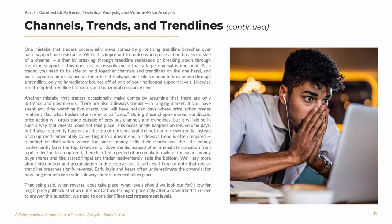We will say more about distribution and accumulation in due course, but it suffices to note that not all trendline breaches signify reversal. Early bulls and bears often underestimate the potential for how long markets can trade sideways before reversal takes place. That being said, when reversal does take place, what levels should we look out for? How far might price pull back after an uptrend, or how far might price rally after a downtrend? In order to answer this question, we need to consider Fibonacci retracement levels.